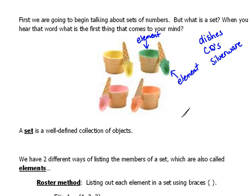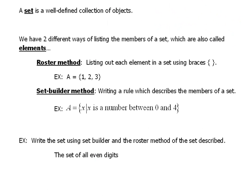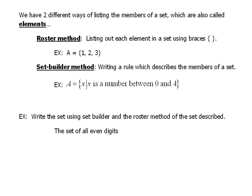Okay, we have two different ways of writing sets and talking about those elements. The first way is called the roster method. And with the roster method, we actually list out each element in our set, and we use braces around it to identify that it is a set. So, for instance, here I have an example, and I said the set A is equal to 1, 2, and 3. These are the three numbers inside this set. I know that this is a set because of the braces around it.